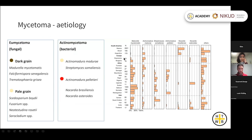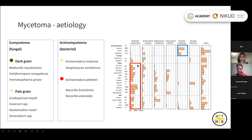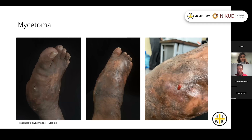There are two main forms of mycetoma: the fungal form, eumycetoma, and the bacterial form, actinomycetoma. The color of the grains can guide you towards the causative organism — dark brown to black, or white to yellow grains can be a helpful clue. Depending on the part of the world, the causative organism varies. In Africa, Madurella mycetomatis causing dark grains is very common, whereas in Mexico and Brazil the bacterial form is much more common, usually caused by Nocardia.